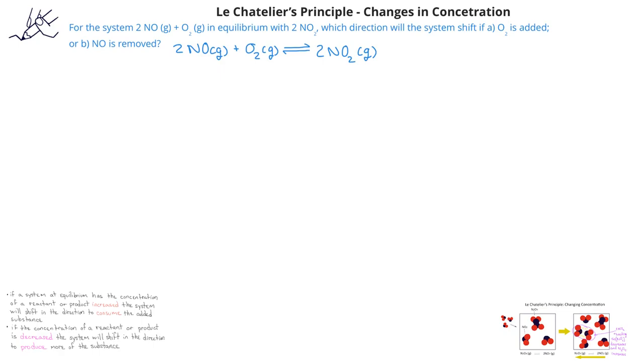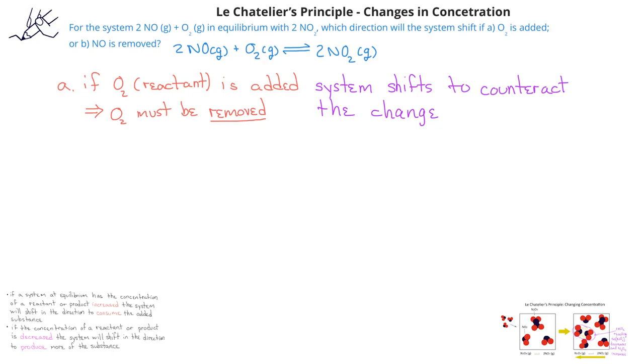In the first situation, we're adding O2, which is a reactant. Le Chatelier's principle says the system will shift to counteract what we did or to remove O2. Since we added O2, the system will try to remove O2 by shifting to the right to use up O2 and produce more NO2.